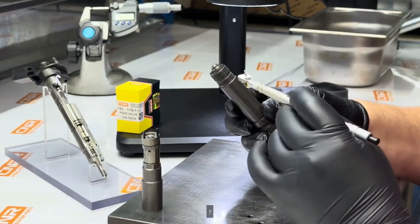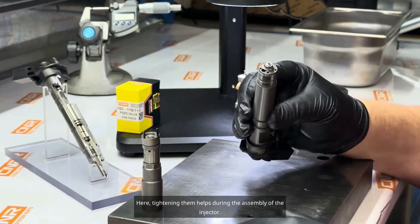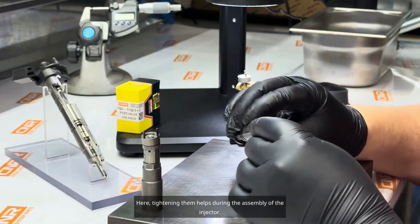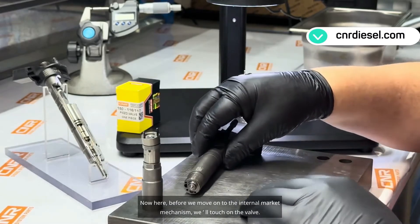Let's say it was removed. There are special liquid gaskets. Tightening them helps during the assembly of the injector. Now, before we move on to the internal market mechanism, we'll touch on the valve.